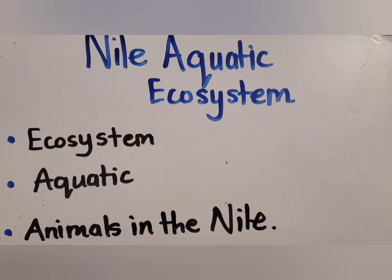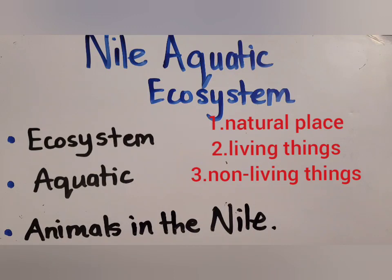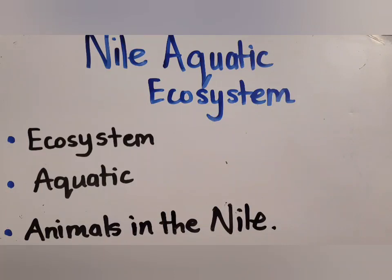The last thing we need to know is the Nile Aquatic Ecosystem. An ecosystem means a natural place with both living things and non-living things in it. When checking if a place is an ecosystem, it must be natural and have both living and non-living things. Examples of ecosystems are forests, deserts, rivers, and oceans. A zoo is not an ecosystem because it is not a natural place, and a fish aquarium is not an ecosystem because it's not natural either.